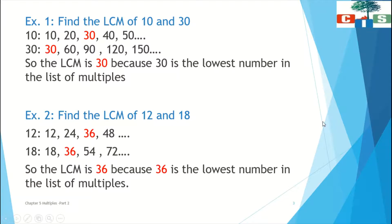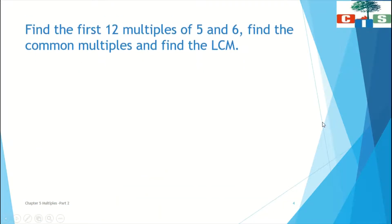Now we will see one more example: find the first 12 multiples of 5 and 6. The instructions are clear — we have to find the first 12 multiples of 5 and 6, then find the common multiples, meaning the numbers present in both lists. Those numbers are known as common multiples, and from them we will find the LCM.